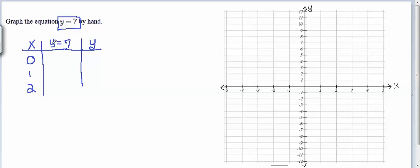So if x is 0, well, the equation tells me y is still 7. If x is 1, nope, y is still 7. And if x is 2, there we go, y is 7. So we've got our three ordered pairs here, 0, 7, 1, 7, and 2, 7.